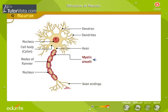The axon ends in terminals which relay impulses to the next neuron. The myelin sheath is a thin layer of fatty material that covers the neurons. However, the myelin sheath is absent in some neurons.